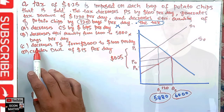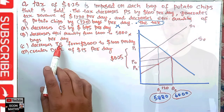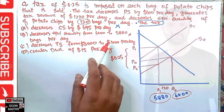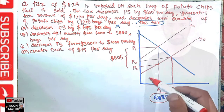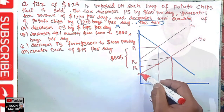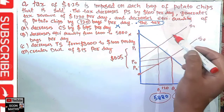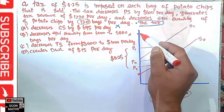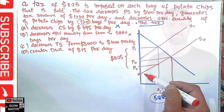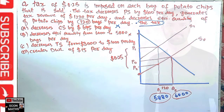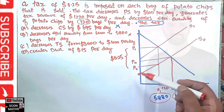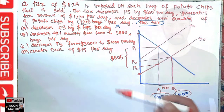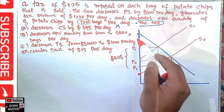Option C says total surplus decreases from $3,000 to $1,000 per day. We cannot calculate total surplus either, because we need the intercepts of both the demand and supply curves to compute consumer surplus and producer surplus. Without those values, this option cannot be verified, so option C is not the answer.